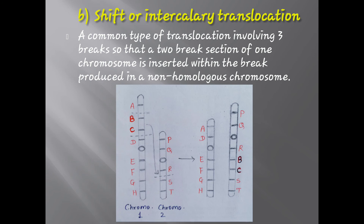Second is shift or intercalary translocation. This involves three breaks: two breaks in one chromosome produce a broken section, and a single break is produced on a non-homologous chromosome. In the diagram, two breaks occur in chromosome 1 between A and B, and C and D, forming broken segment BC, while a single break occurs in another chromosome between segment R and S. The broken segment BC then joins in between R and S — this is shift or intercalary translocation.